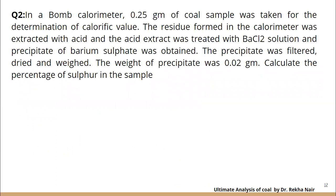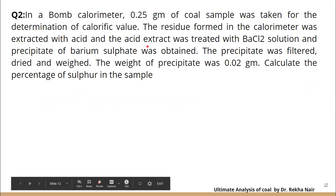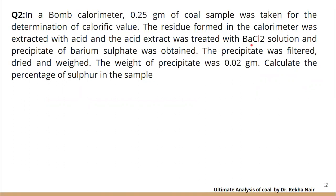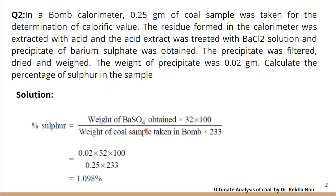Next numerical related to sulfur: In a bomb calorimeter, 0.25 grams of coal sample was taken for determination of calorific value. The residue was extracted with acid, and the acid extract was treated with barium chloride solution. The precipitate of barium sulfate obtained was filtered and weighed; the weight of the precipitate was 0.02 grams. Using percentage sulfur = (weight of BaSO4 / weight of sample) × (32/233) × 100 = (0.02 / 0.25) × (32/233) × 100.